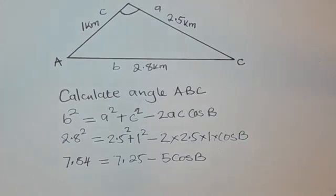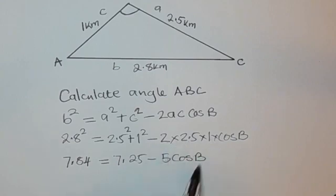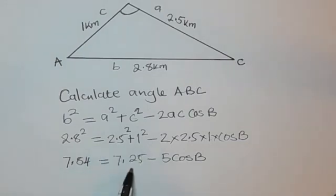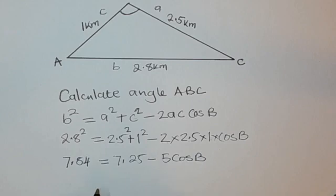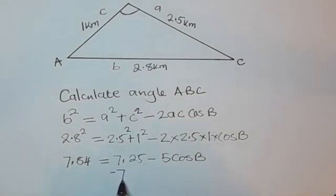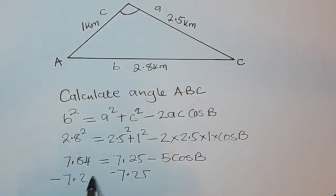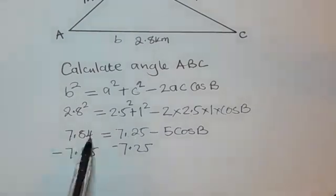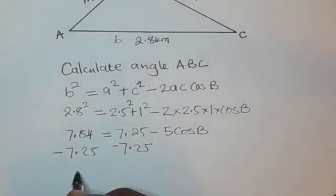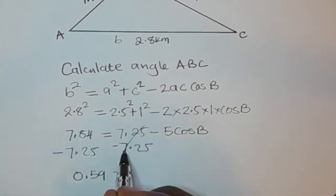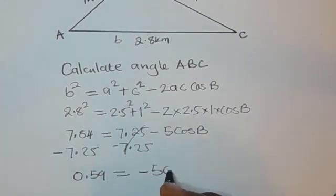Our aim is to find angle B, so we need to isolate the cos B term on one side. We remove 7.25 from the right by subtracting it from both sides. So 7.84 minus 7.25 gives 0.59, which equals negative 5 cos B.